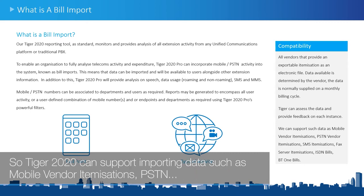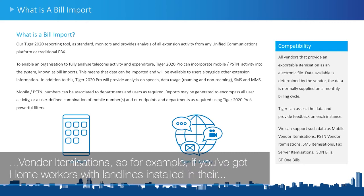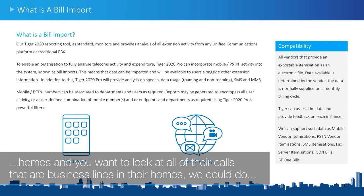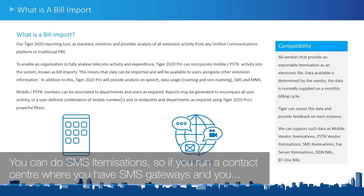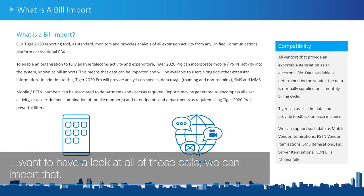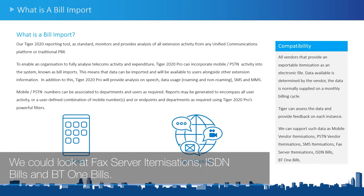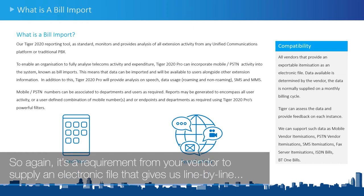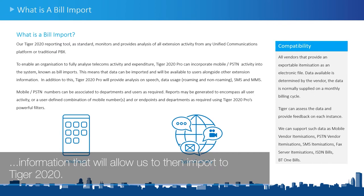Tiger 2020 can support importing data such as mobile vendor itemizations and PSTN vendor itemizations. For example, if you have home workers with landlines installed in their homes and you want to look at all their calls on those business lines, we can do that. You can do SMS itemizations, so if you run a contact center with SMS gateways we can import that. We can also look at fax server itemizations, ISDN bills, and BT1 bills. The requirement is an electronic file providing line-by-line information.